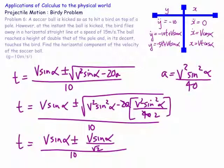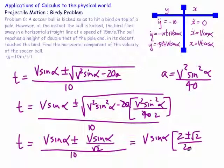So we have t equal to v sine alpha plus or minus — we've got v² minus a half of v² — so v sine alpha on root 2, all over 10. The time simplifies to a factor involving root 2 on 20.